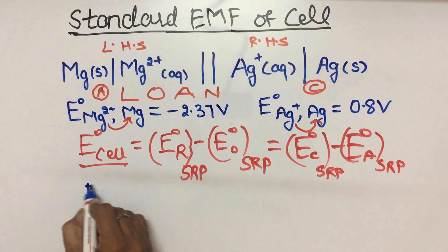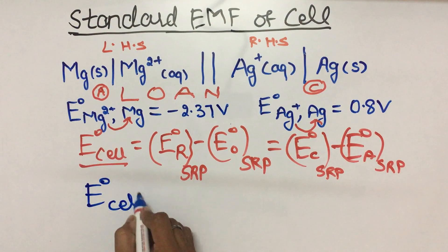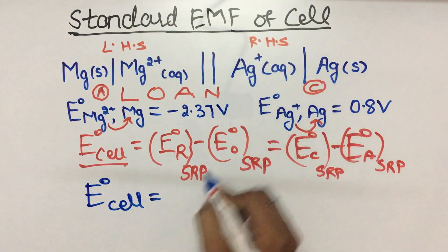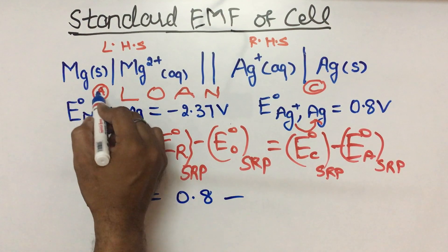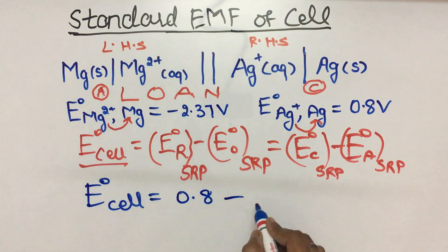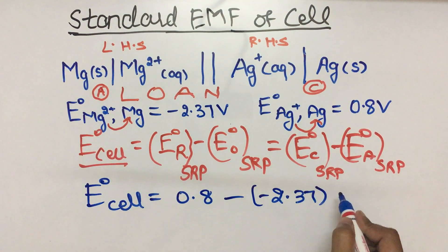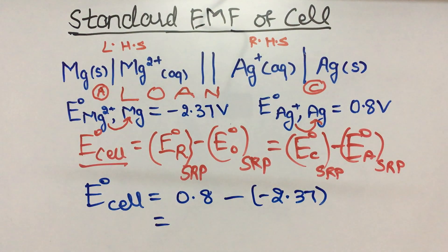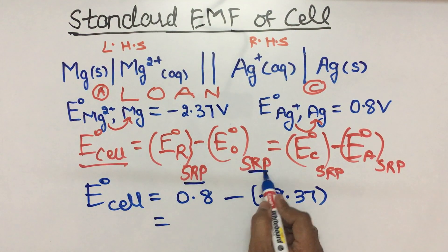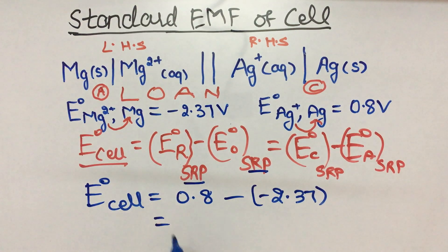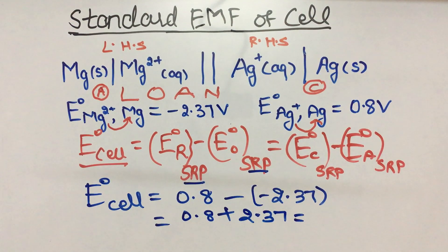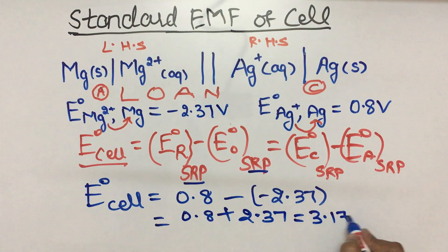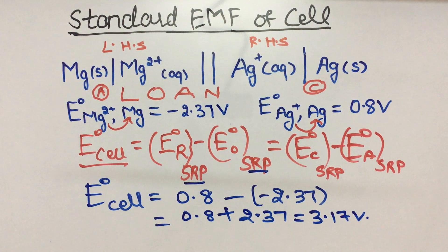For this reaction, our cathode is the right hand side — silver. Silver's standard reduction potential is 0.8 V, minus the anode's standard reduction potential which is minus 2.37 V. So the answer is 0.8 plus 2.37, which gives 3.17 V.